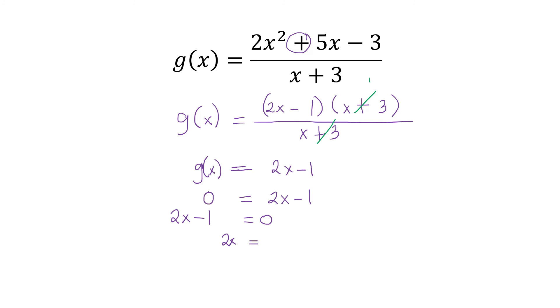Next, by APE, we have 2x = positive 1. And then, by MPE, when you multiply both sides by 1 half or simply, when you divide both sides by the numerical coefficient of x, then that is 2 divided by 2 is 1.